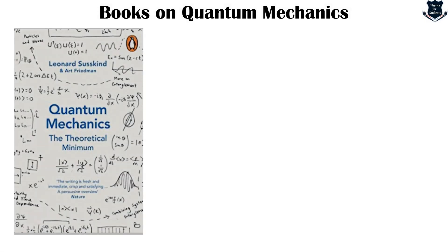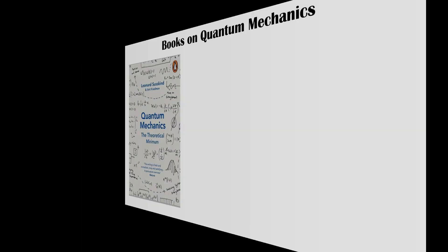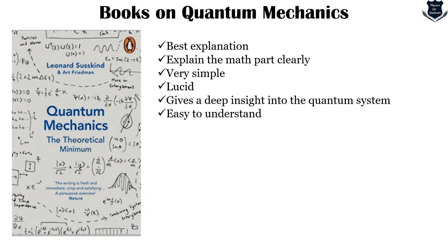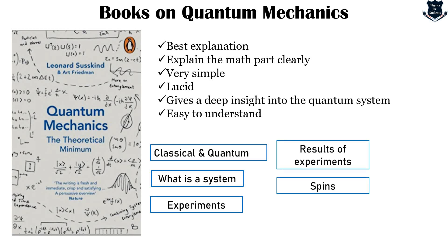The next book is Leonard Susskind's 'Quantum Mechanics: The Theoretical Minimum' — a golden book with a 66% Amazon rating, though I think it deserves more. It is one of the best explanations of quantum mechanics — deep, philosophical, clear in mathematics, lucid, and easy to understand, almost like reading a storybook. It starts with classical versus quantum systems, experiments and their results, then spins, vector spaces, and more. It is also a self-complete book, meaning the mathematics is taught to you within it.